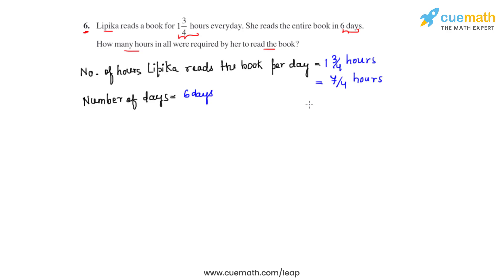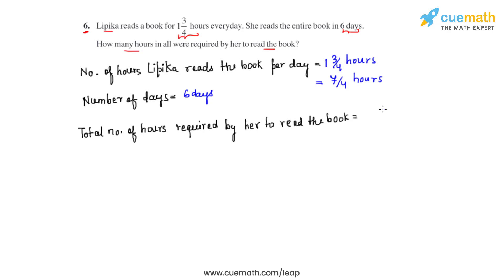From this we can find the total number of hours required by her to read the book. That will be equal to the number of days she has read the book times the time spent by her every day, which is 7/4. So we'll try and cancel out the common factors.